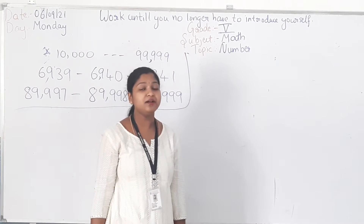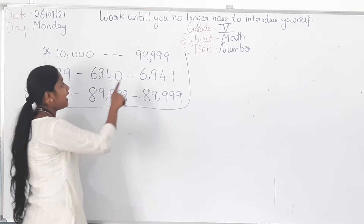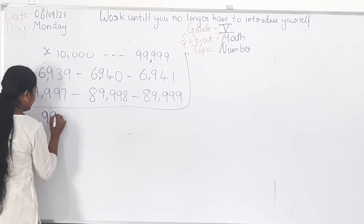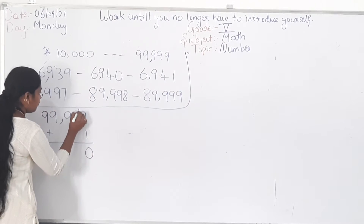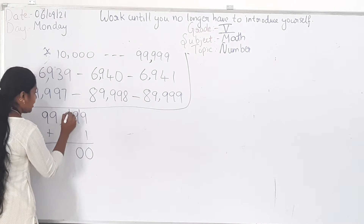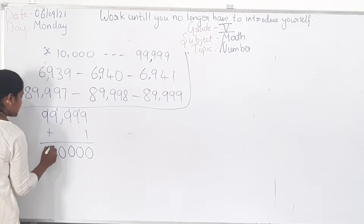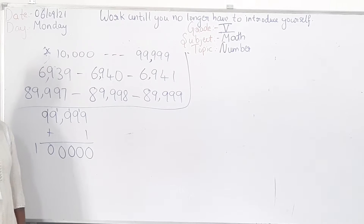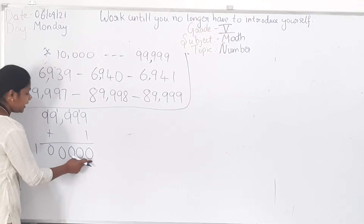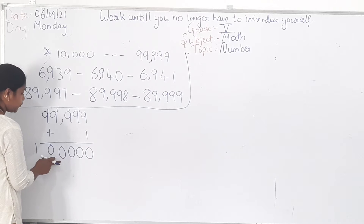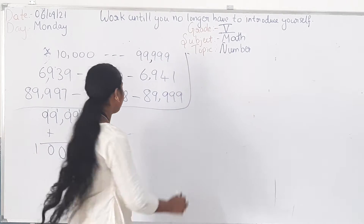We will move on to the next topic. Now we will see the 6-digit number. How will you find the 6-digit number? You will add 1 to the largest 5-digit number: 99,999 plus 1. Each digit 9 plus 1 carries over, giving you 1,00,000. The place values are: units, tens, hundreds, thousands, ten thousands, and the new place is called lakh. So 1,00,000 is 1 lakh. The largest 6-digit number is 9,99,999.